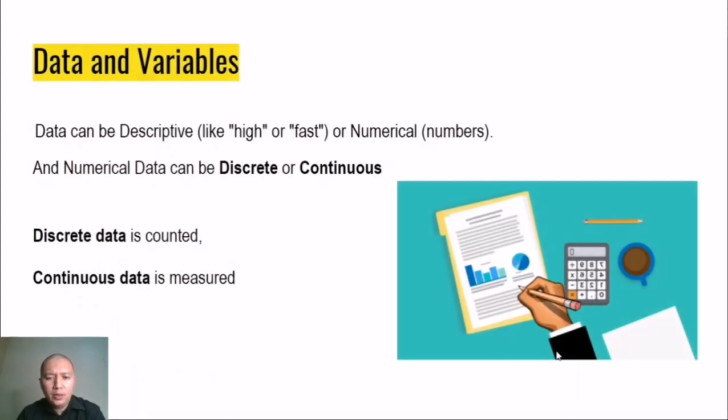In continuation of what we have discussed last time, we will now be covering data and variables. Data can be descriptive like high or fast or in numerical form or numerical numbers. Numerical data can be discrete or continuous. When you say discrete, the data can be counted, while continuous means the data can be measured.